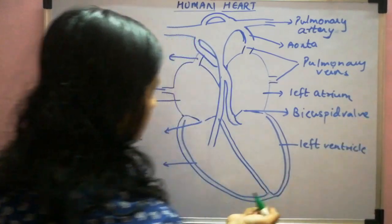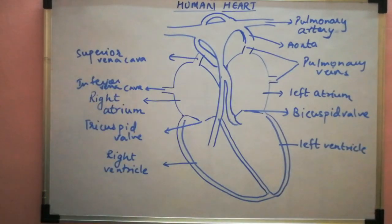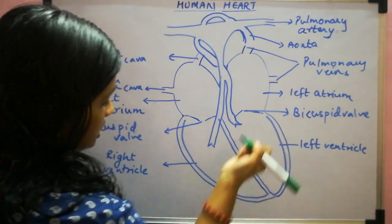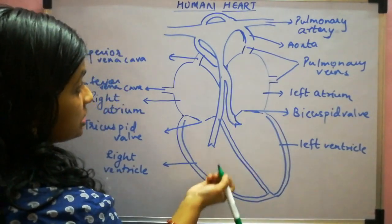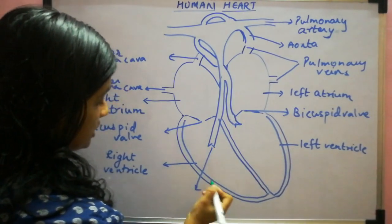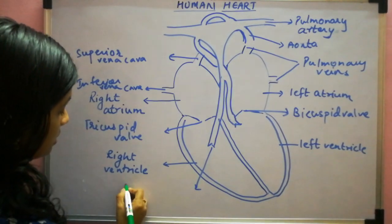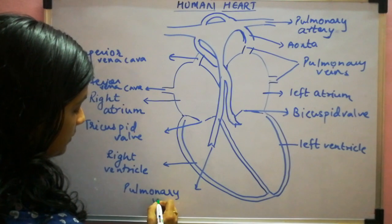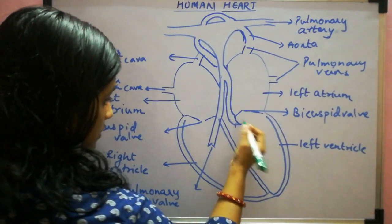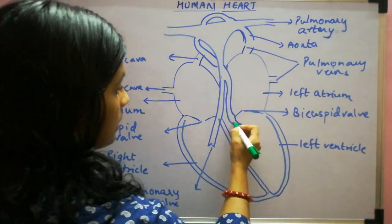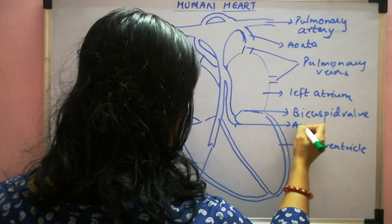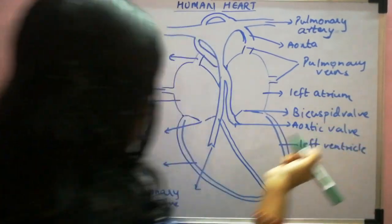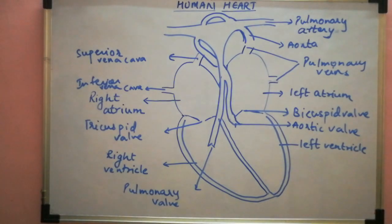What is left is the valve between these arteries. The one starting from the pulmonary artery is known as the pulmonary valve, and the one starting from the aorta is known as the aortic valve. So the diagram is ready with all the labelings. Thanks for watching.